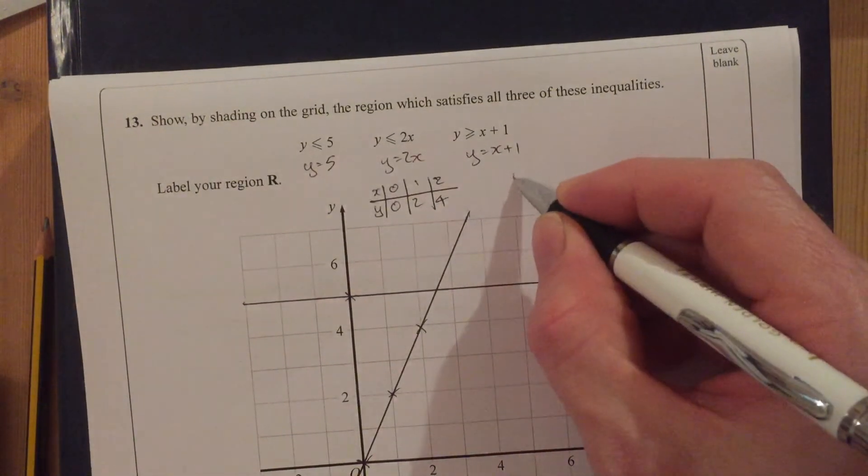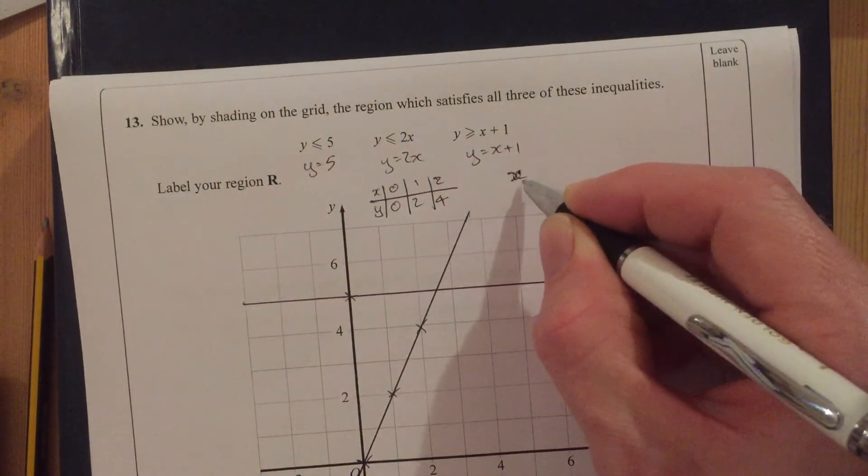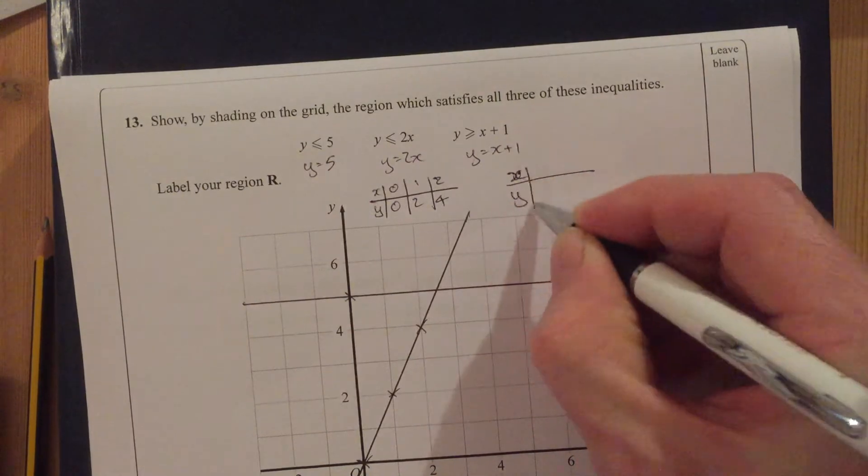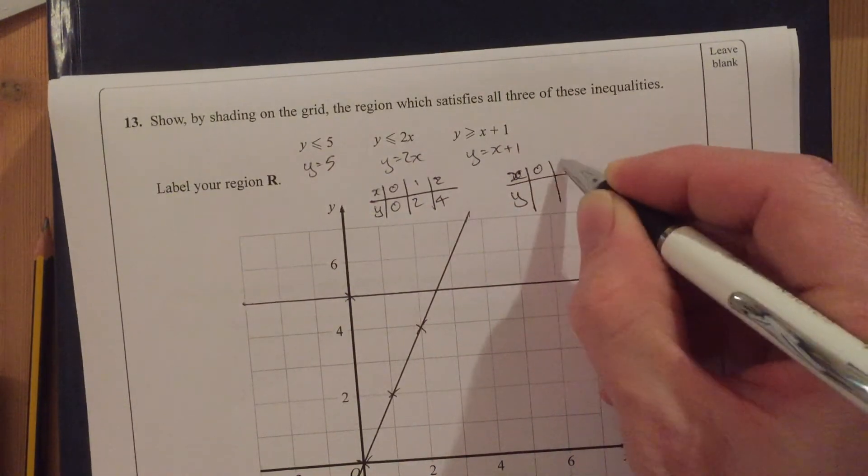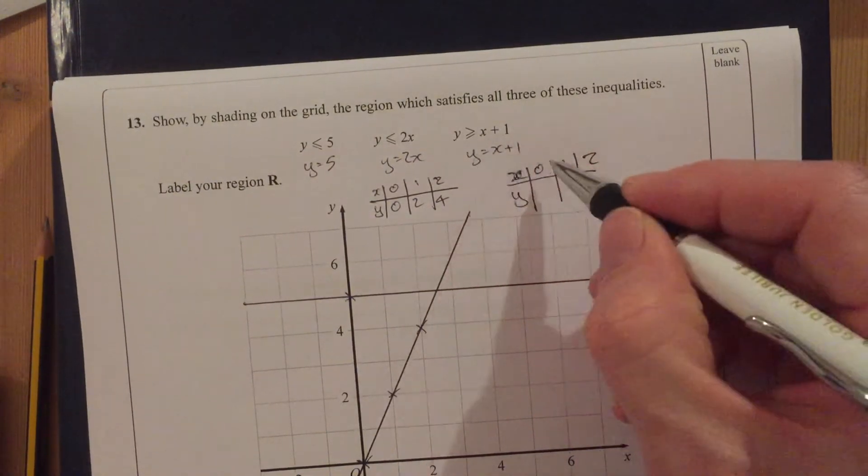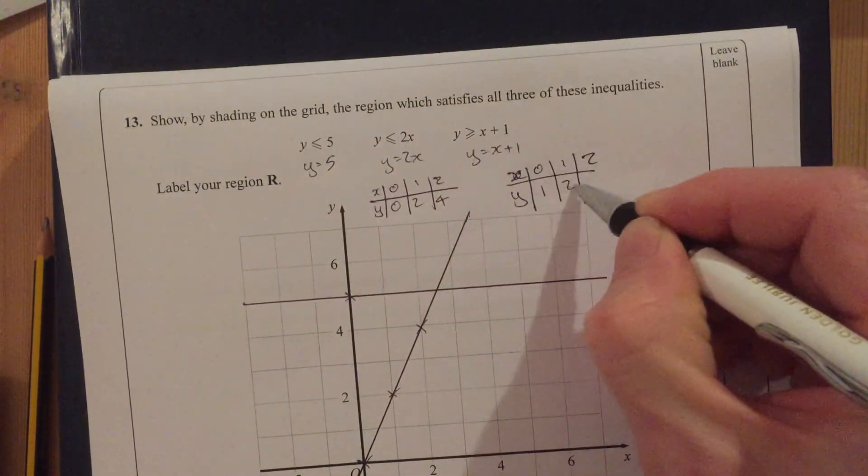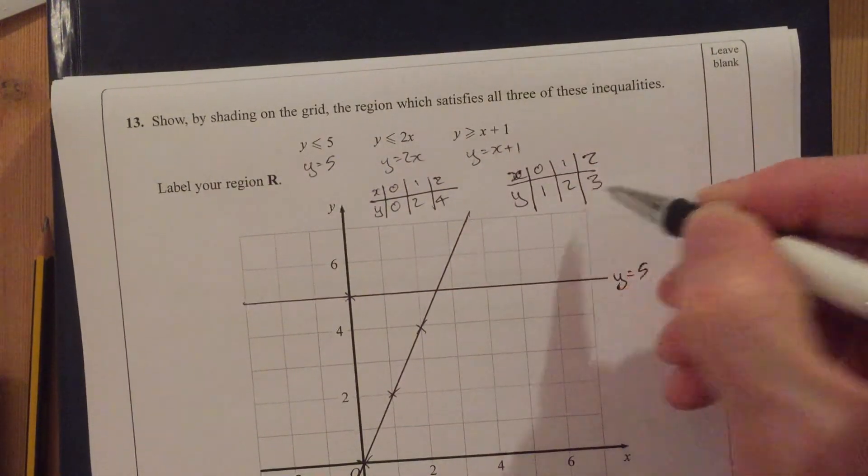And then y equals x plus 1. So let's do another little table. x and y, 0, 1, 2. When x is 0, y is 1. When x is 1, y is 2. When x is 2, y is 3.